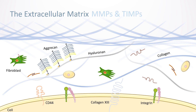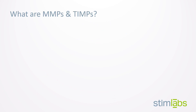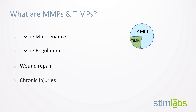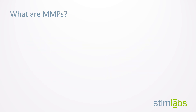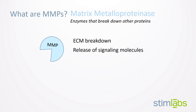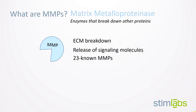The proteins mainly responsible for this turnover are called MMPs and TIMPs. They are two types of proteins that go hand-in-hand and often come up in conversations about tissue maintenance and regulation, in particular when discussing wound repair and chronic injuries. The proper functioning of each depends on the other, and they work together to help create a balanced environment that keeps tissue healthy. MMP stands for matrix metalloproteinase. They're a type of enzyme that break down other proteins — more specifically, they are responsible for the regular breakdown of the ECM. There are currently 23 known human MMPs, and each one specializes in the breakdown of different ECM molecules.